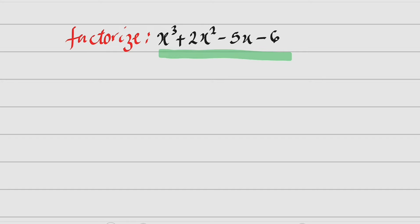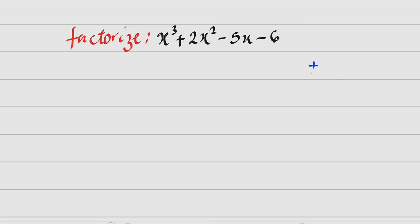But first of all, let us find one of the roots of this cubic polynomial. You can see that the leading coefficient is 1, therefore the values of x we are going to use are the factors of the constant, negative 6. And the factors are plus or minus 1, plus or minus 2, plus or minus 3, plus or minus 6. We substitute for 1. If it doesn't work, we substitute for negative 1, then positive 2, negative 2, in that order.